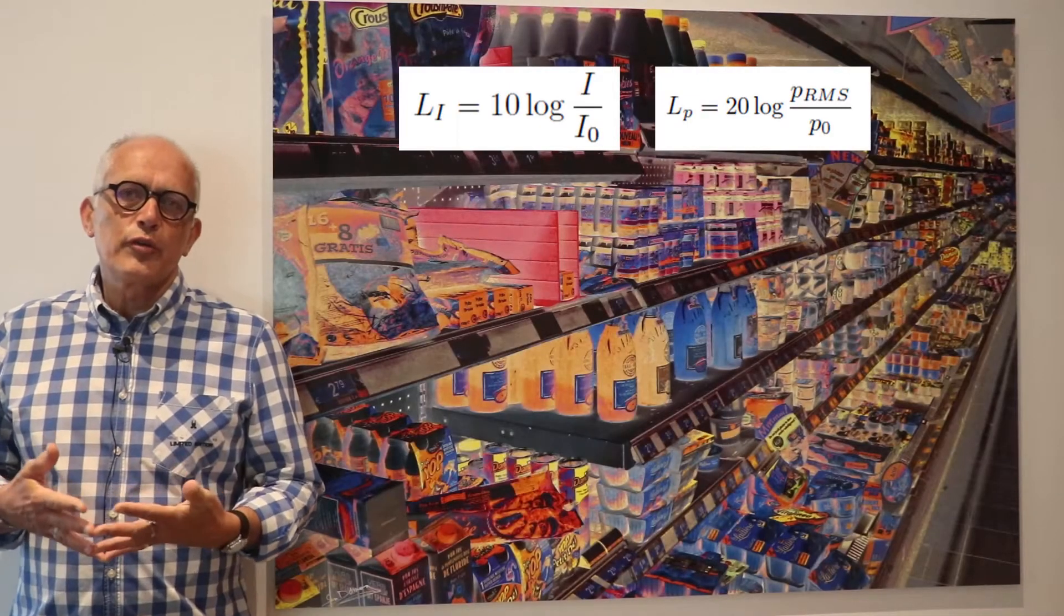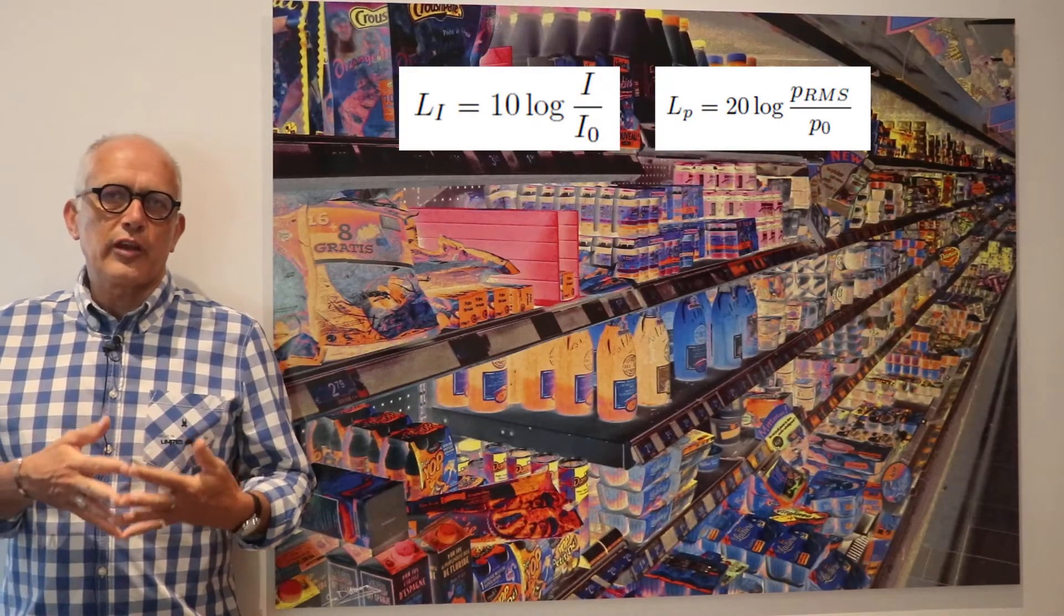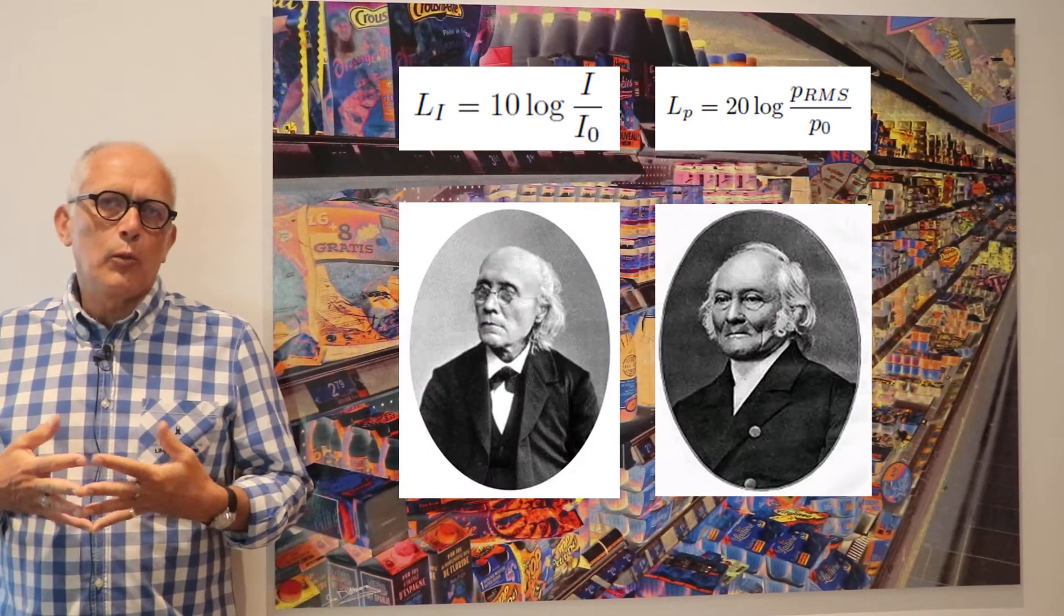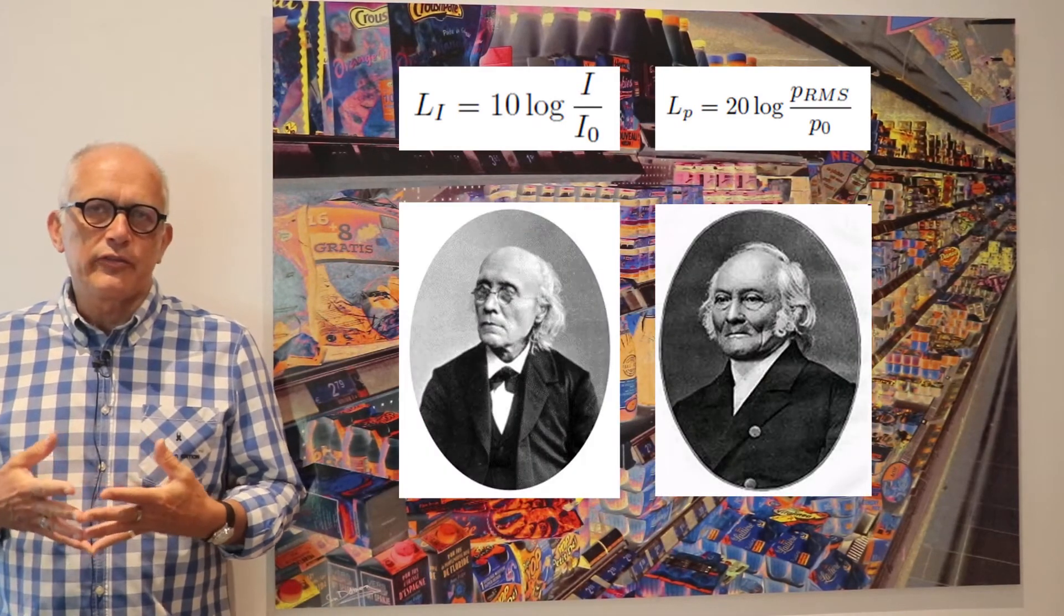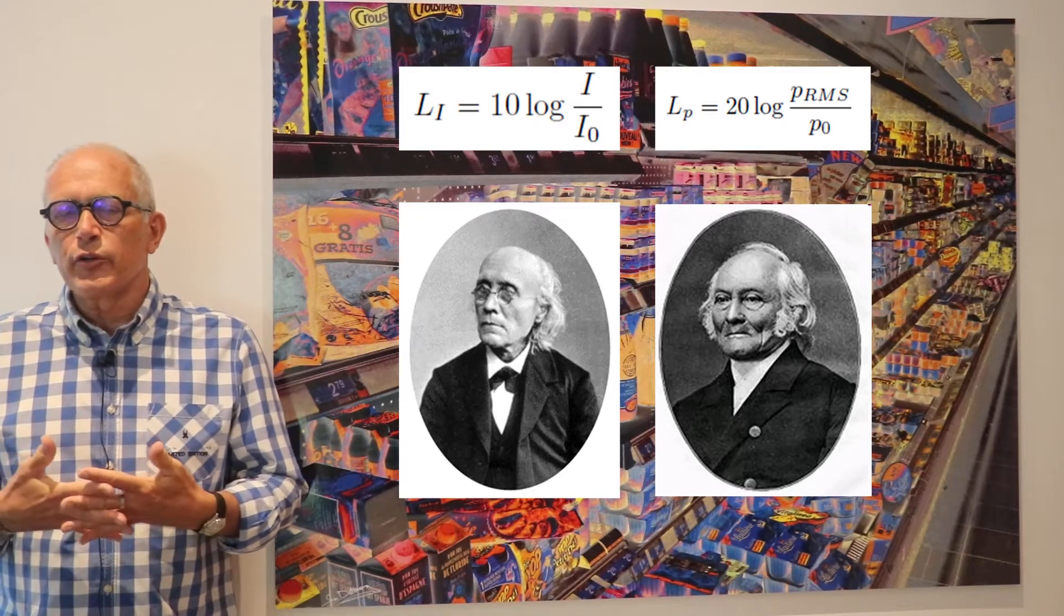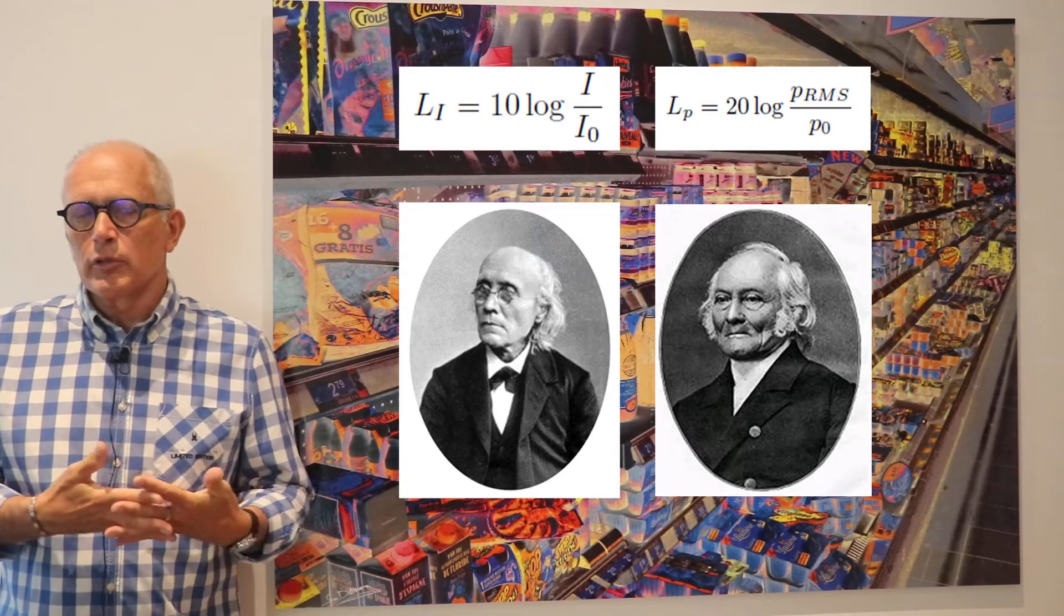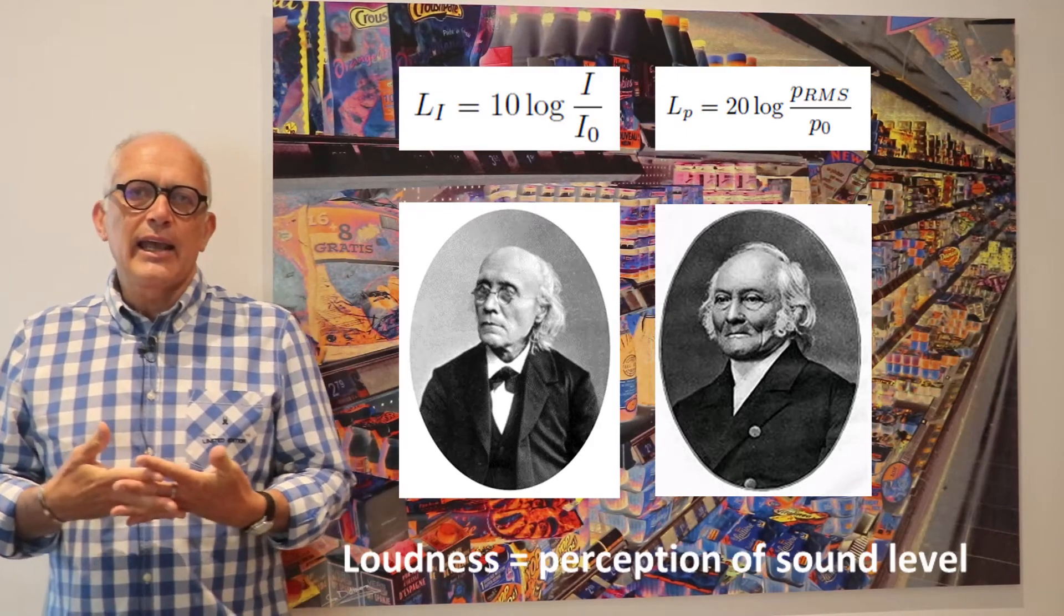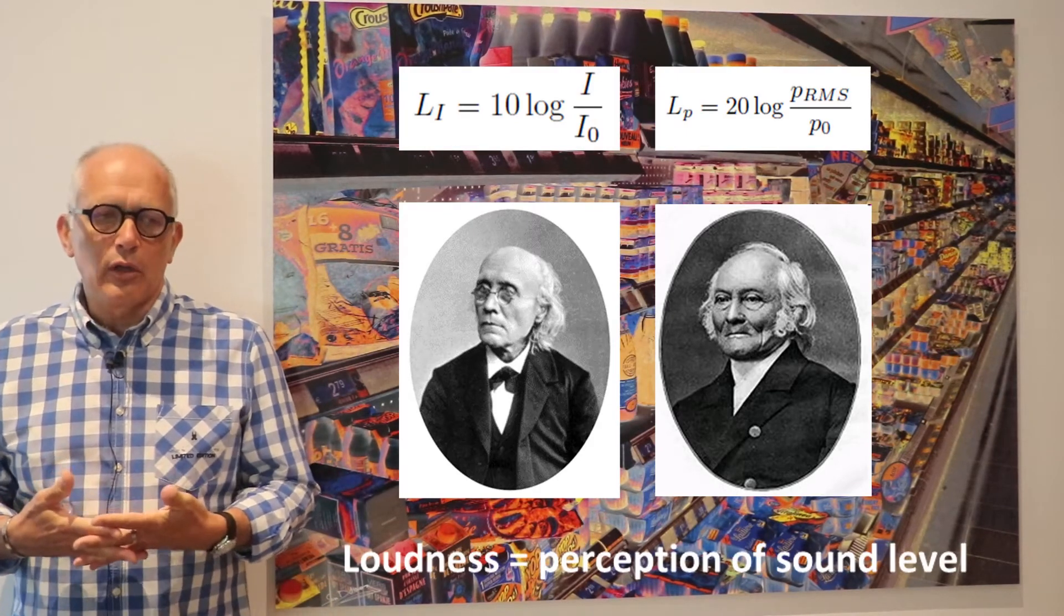The use of a logarithmic scale for sound levels derives from observation by Weber and Fechner and is a first attempt to reconnect our perception of a sound level, which is called loudness, and the actual physical measurement.